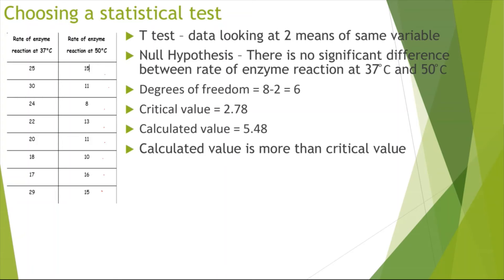This would mean that there is a significant difference between the rate of enzyme reaction at 37 degrees and at 50 degrees. The probability of the results occurring due to chance is less than 0.05 or less than 5%, so there is a very high chance of the results being significant.